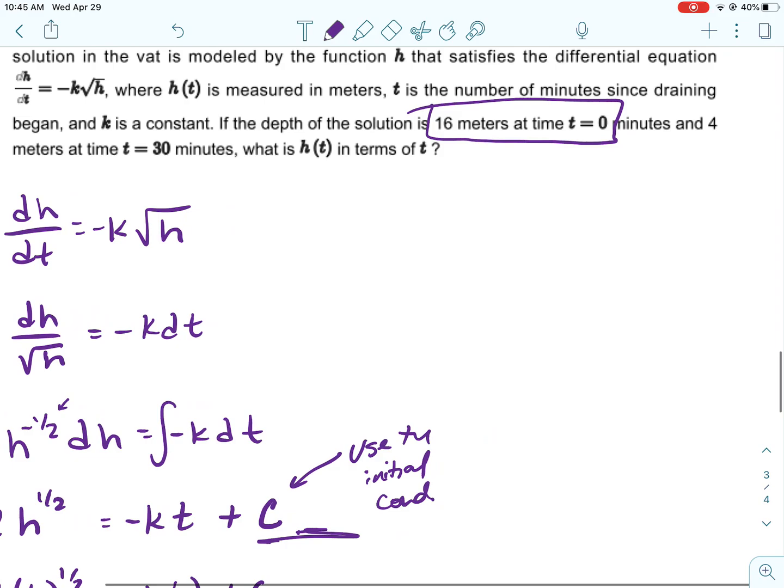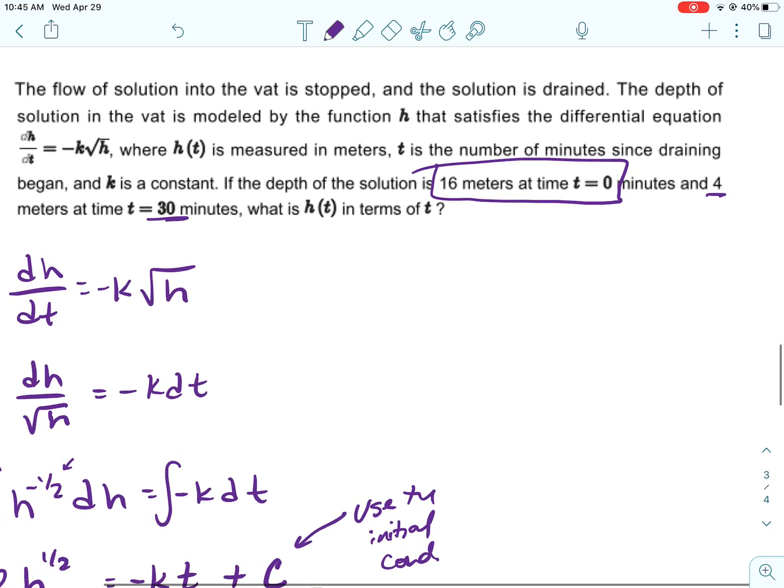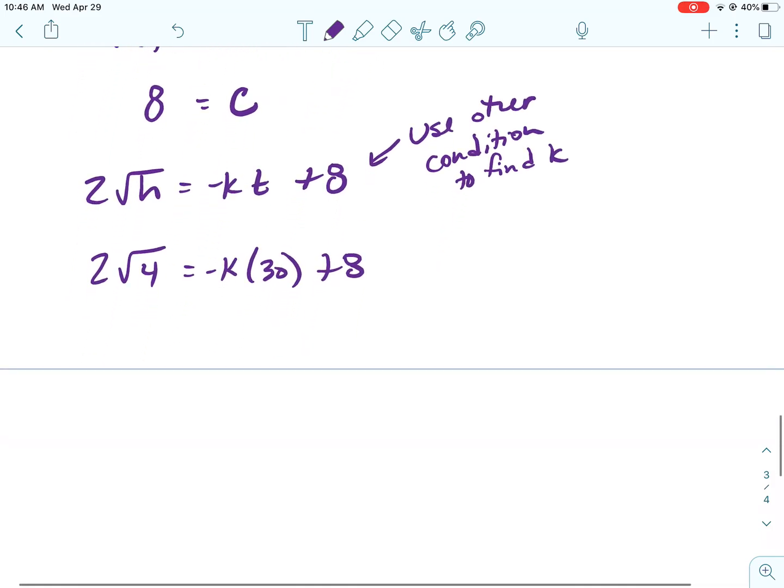Now there's another thing we need. We need to figure out K. So we're going to use the other condition to find K. So our other condition is that at 30 minutes, the depth is 4. And our time is in minutes, right? Yes. So I can go ahead and do that.